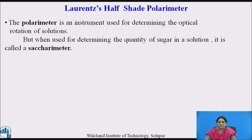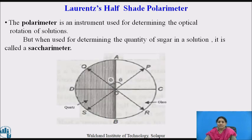Now we can see the construction of the Lorentz half-shade polarimeter. A polarimeter is an instrument used to determine the optical rotation of solutions. When it is used to determine the quantity of sugar in a solution, it is called a saccharimeter. The half-shade plate consists of one half made of quartz crystal and the other half made of glass. This polarimeter was invented by scientist Lorentz, hence it is called the Lorentz half-shade polarimeter.